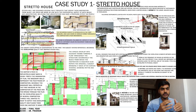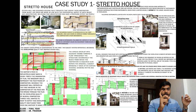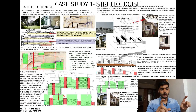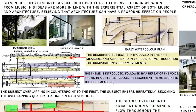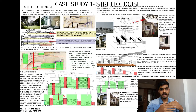Moving on to my first case study — Steven Holl is an architect who created the Stretto House in the way I wanted music in architecture to be developed. He took a music composition, found the patterns coming in it, identified those patterns, and used those ideas to make his concept and whole building. In the first measure, marked in yellow, the recurring subject is introduced and heard in various forms throughout the composition. In the blue part, the theme is introduced followed by a repeat of voice shown in different colors. A recurrent theme begins in the fifth measure.